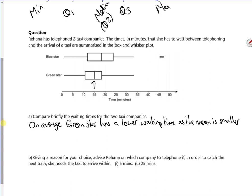Let's have a look at the interquartile ranges. So the interquartile range is the length of the box. If you look also, Green Star, their wait times are more consistent because it's got a smaller interquartile range. So the waiting times...